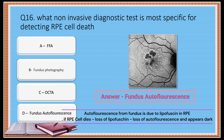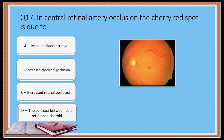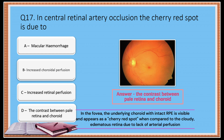loss of autofluorescence, and it appears dark. Question 17: In central retinal artery occlusion, the cherry red spot is due to — Option A: Macular hemorrhage. Option B: Increased choroidal perfusion. Option C: Increased retinal perfusion. Option D: The contrast between pale retina and choroid. The correct answer is Option D: the contrast between pale retina and choroid.